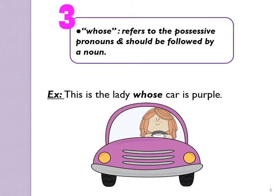Whose refers to possessive pronouns and should be followed by a noun — it is used for possessions. Look at the example: This is the lady whose car is purple. This means that when I saw the lady for the first time, I saw her with the purple car, so I know her by her car. The second time I saw her, I say: this is the lady whose car is purple.